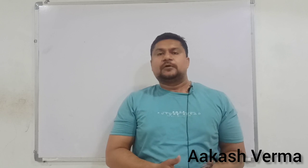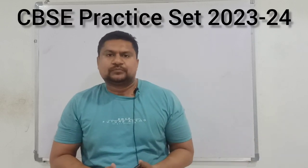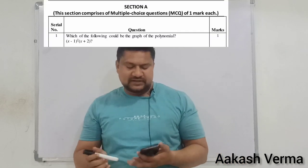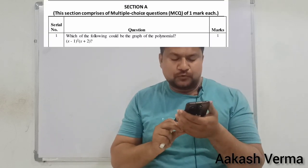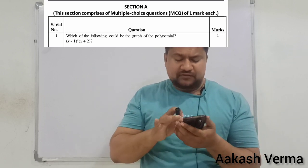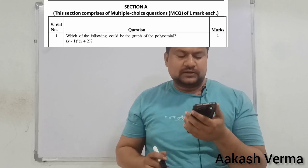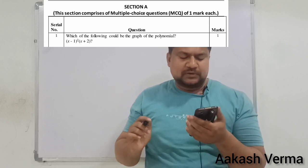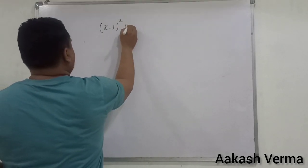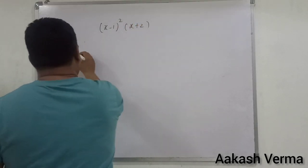In this video, I will speak about and explain the CPSC practice set mathematics. The first question of our practice set is: which of the following could be the graph of the polynomial equation (x minus 1) squared times (x plus 2)? You can see the equation and options on the screen.